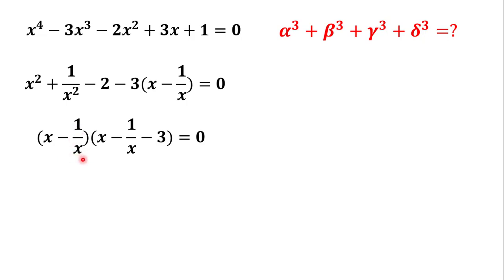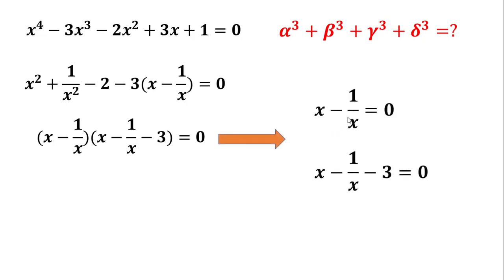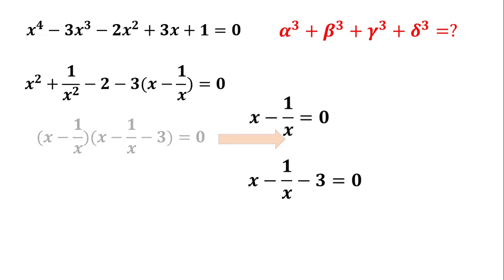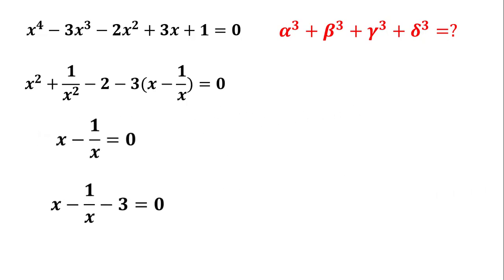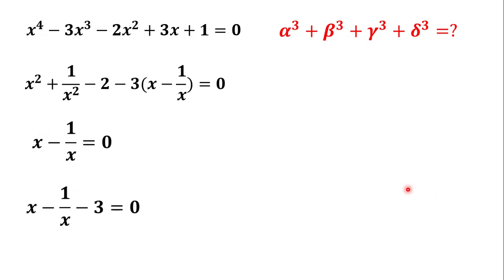We get: (x minus 1 over x) times (x minus 1 over x minus 3) equals 0. Each of these two expressions can be set to 0, giving us x minus 1 over x equals 0 and x minus 1 over x minus 3 equals 0.